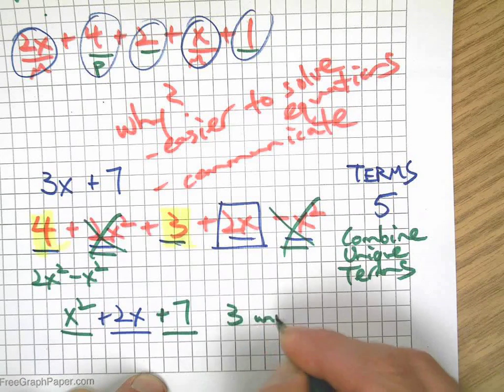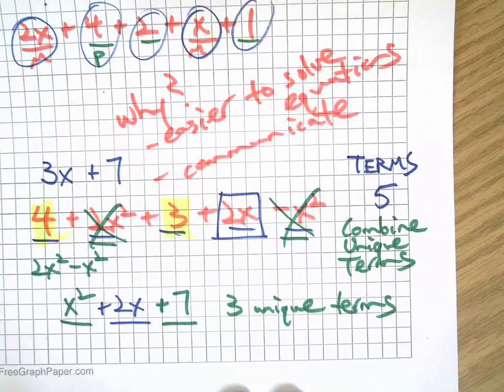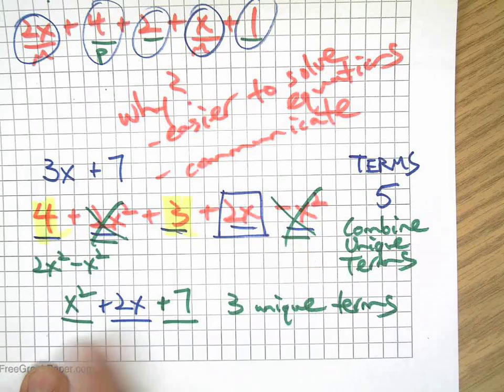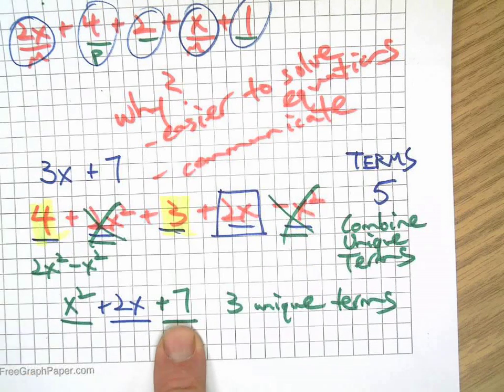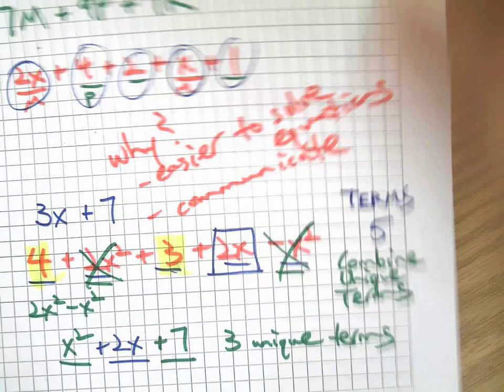So, here I actually have three unique terms. So simplifying is another way of finding out, you know, hey, at first it looks like I have five terms. It turns out I really only have three once they're simplified.